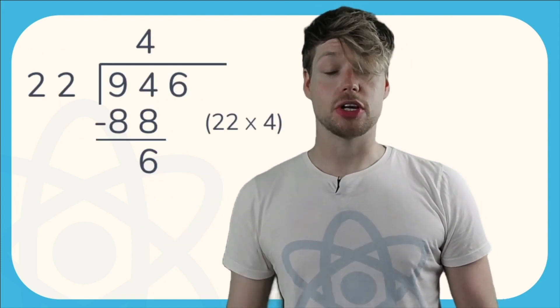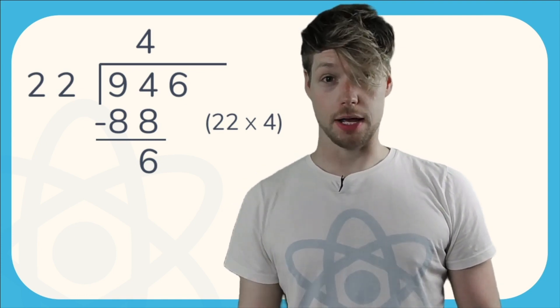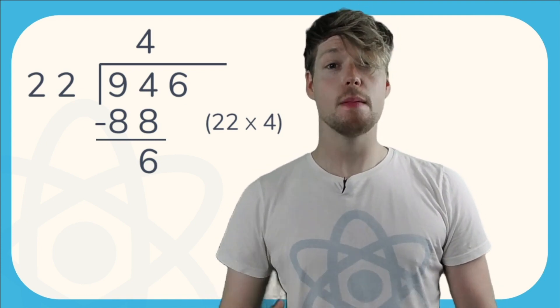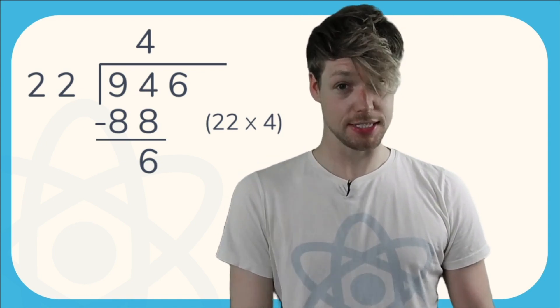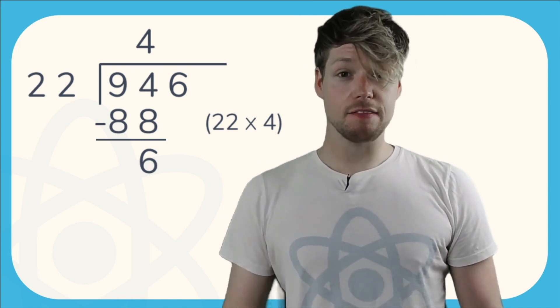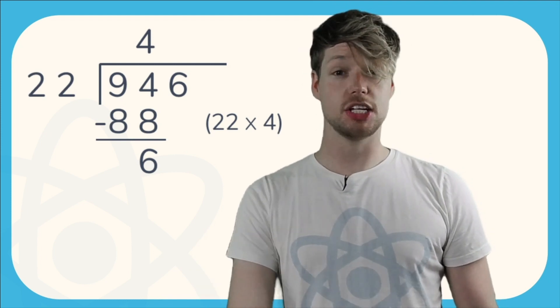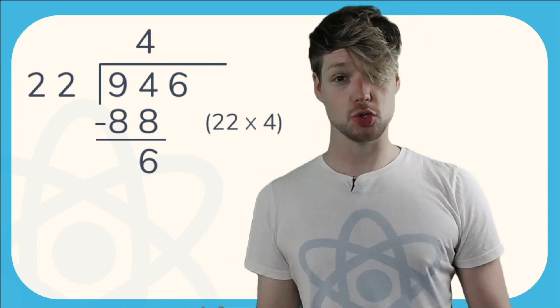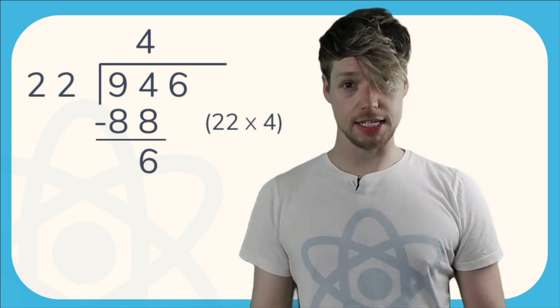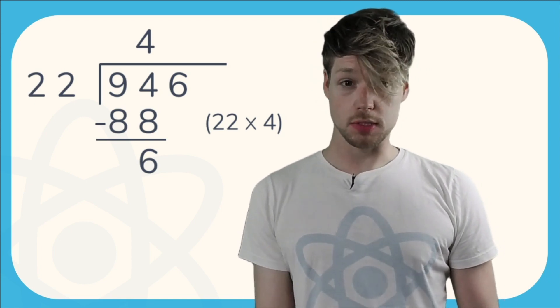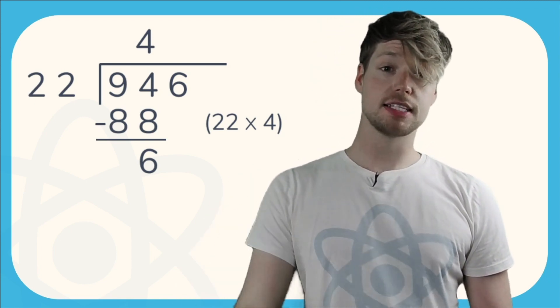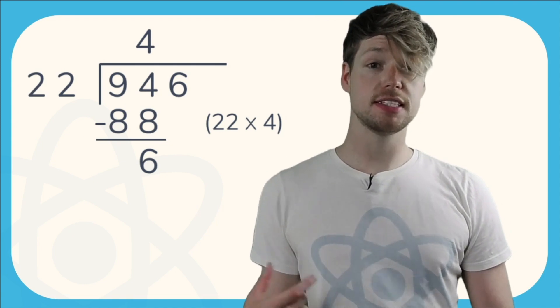What we do here, we can see that 22 goes into 94 four times. We then write the 4 above the 4 in 946. Once we have done that division of 94 divided by 22, the next stage is to multiply 4 by 22. This gives us 88. Once we've done that multiplication we need to subtract 88 from 94 which gives us 6.